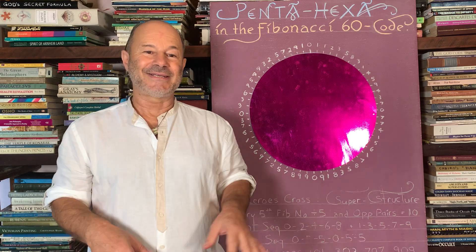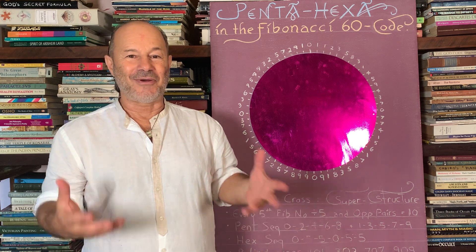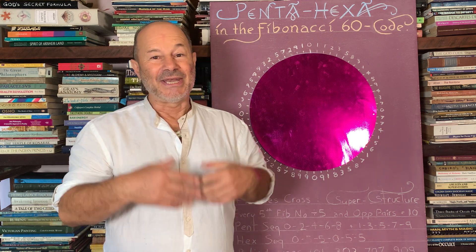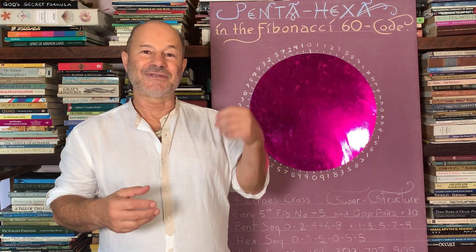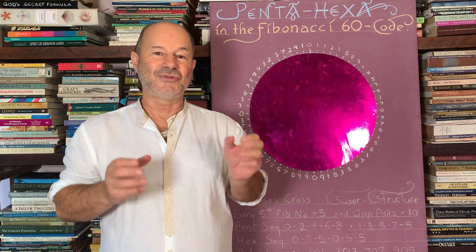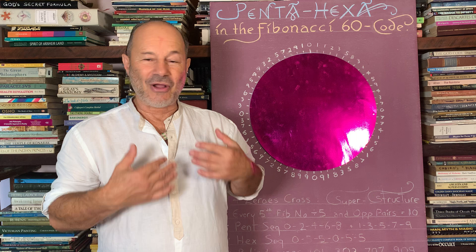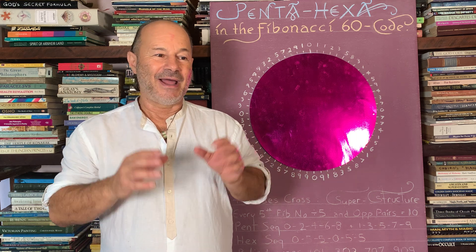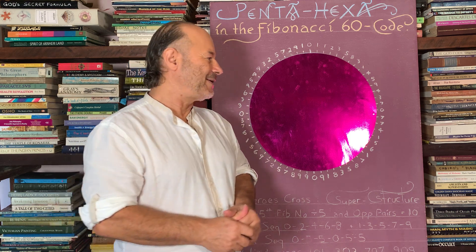Welcome everybody. Today's lesson is another one on the golden ratio. I'm obsessed about the magnificence of the phi ratio and especially the origin of the phi ratio in the Fibonacci sequence. I believe the Fibonacci sequence is indeed a true superstructure, and if you want to study sacred geometry like I have for 40 years — I've been studying Fibonacci codes for four decades — this one I'm going to reveal to you is called the 60 code.